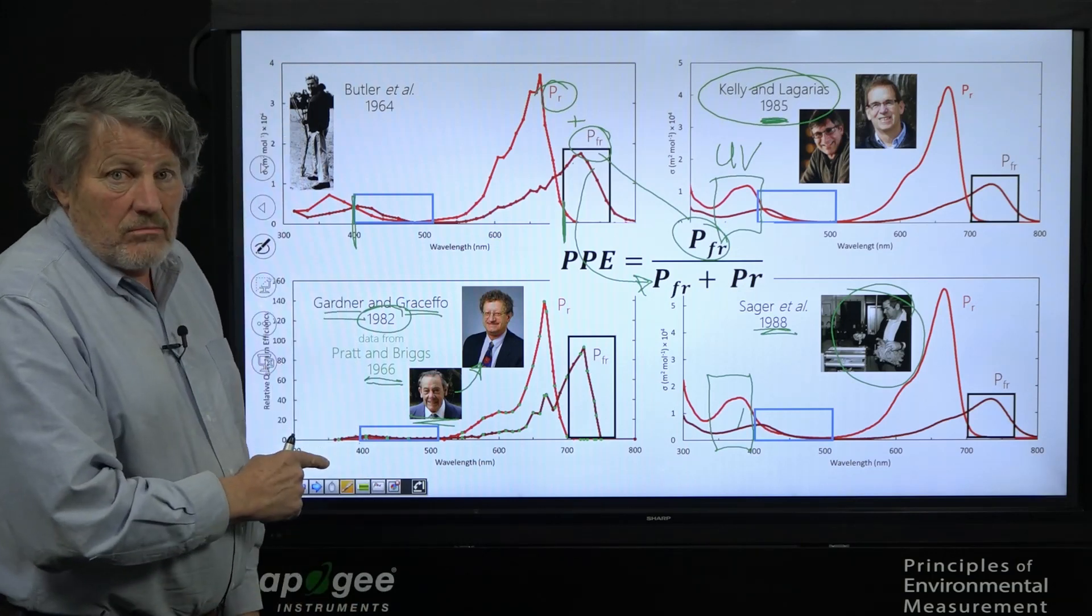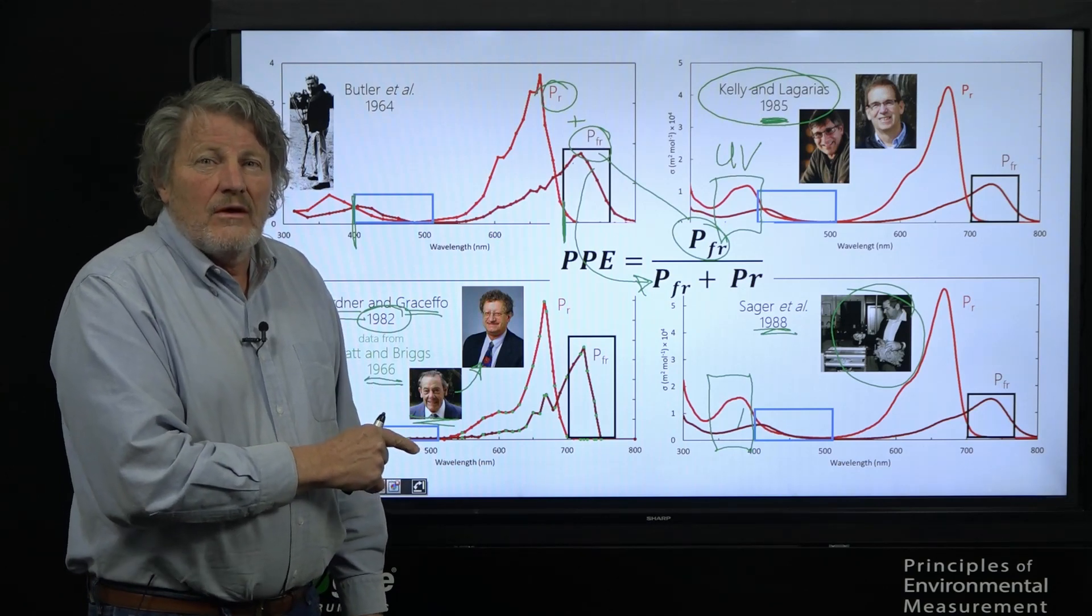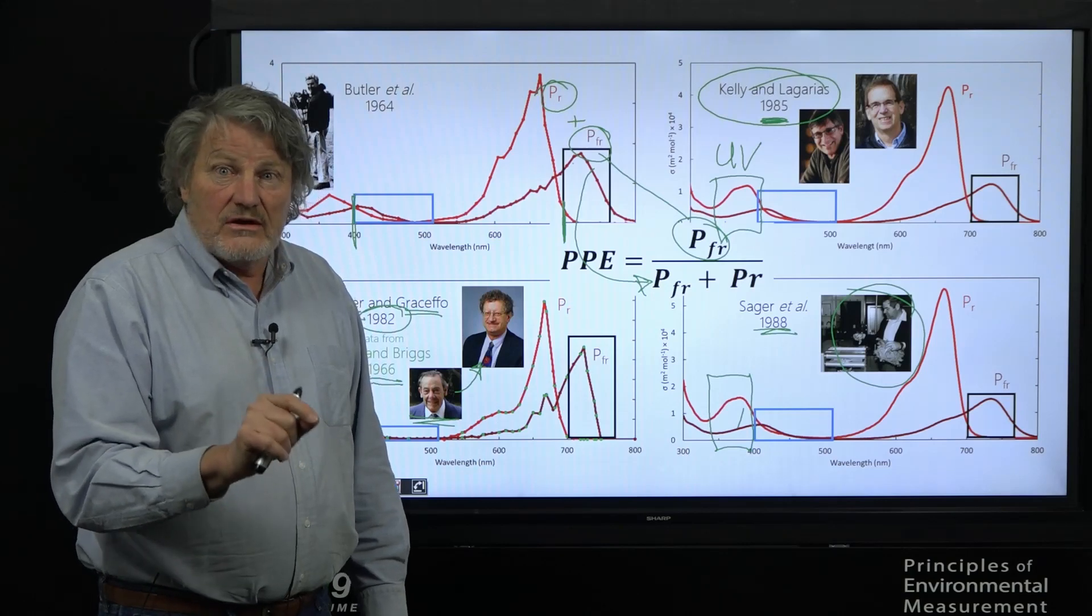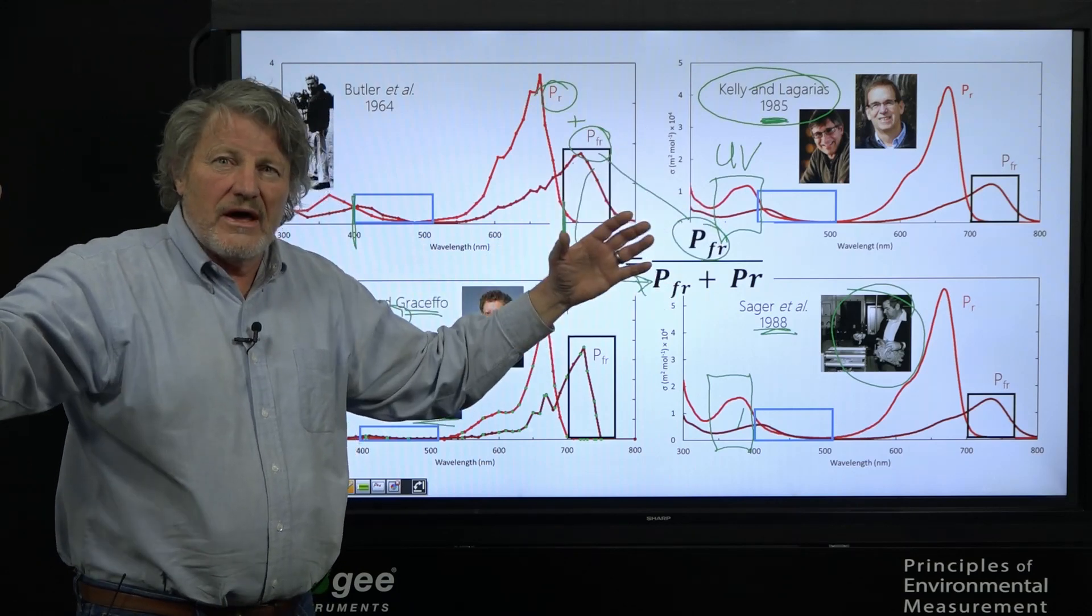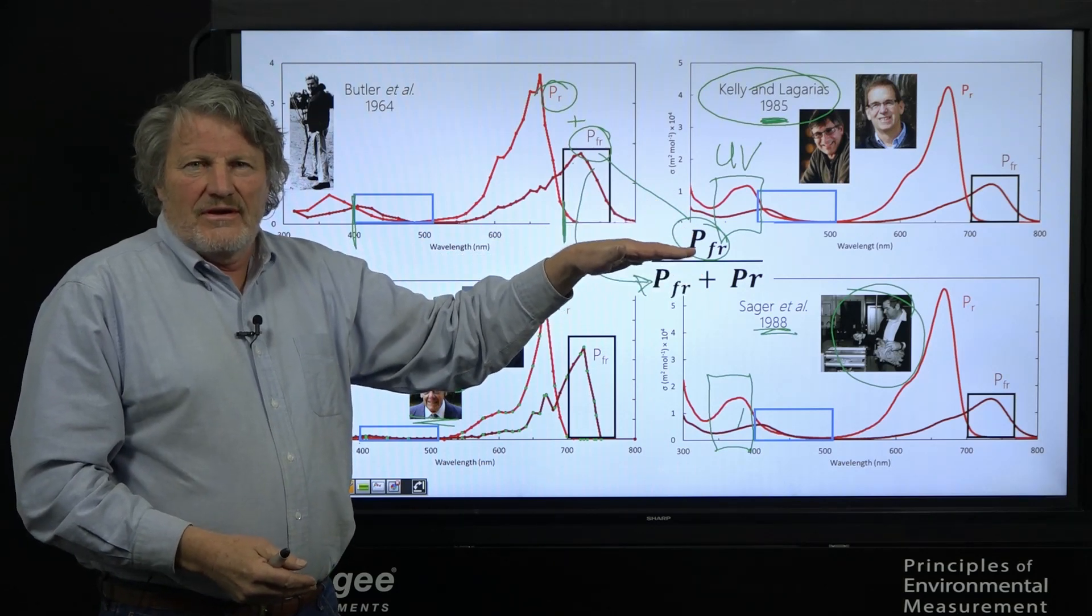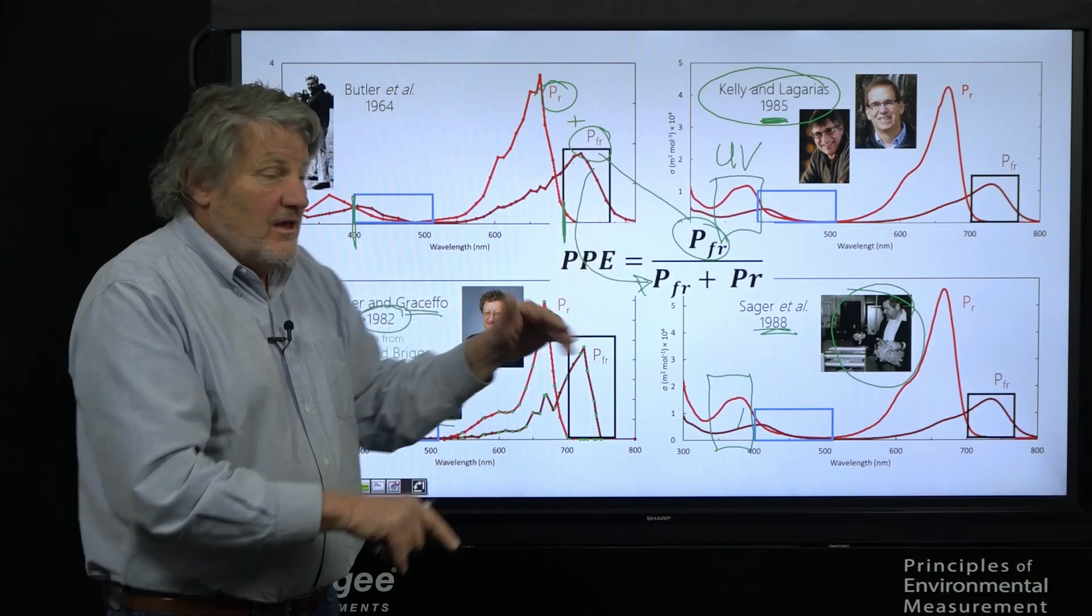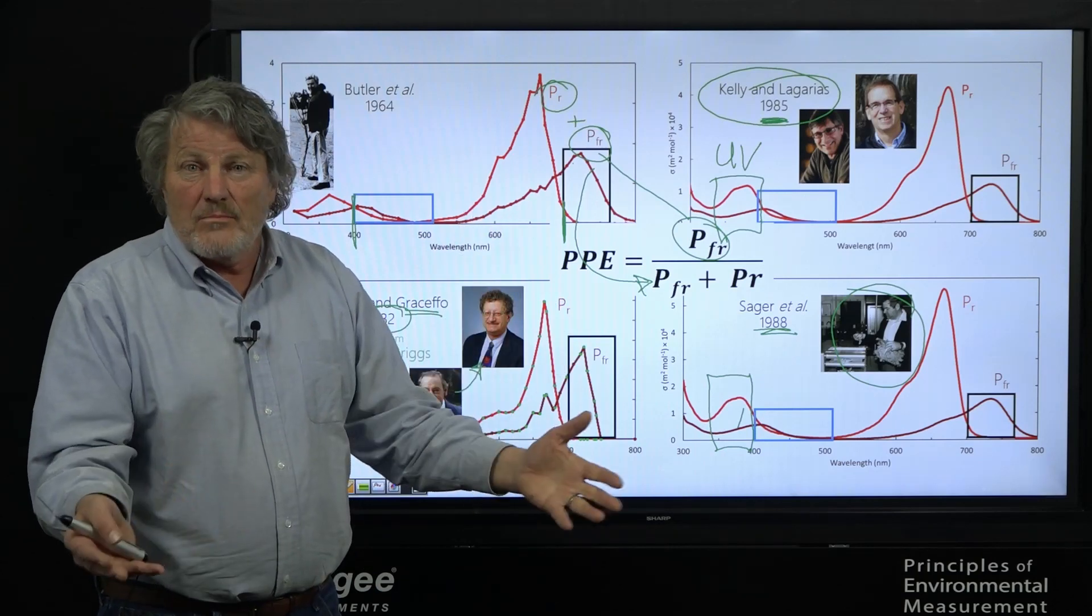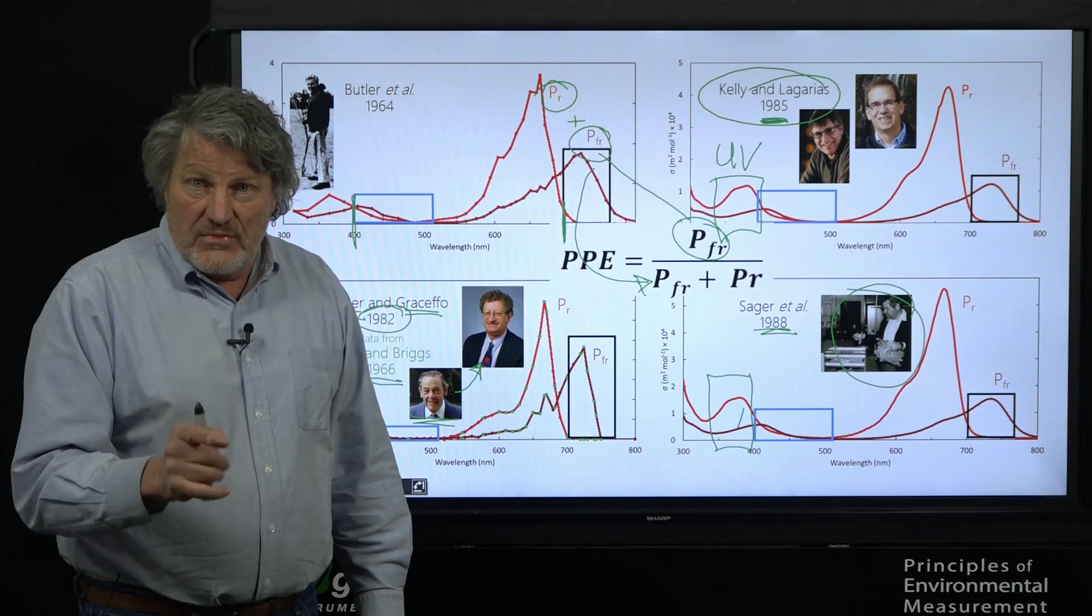But this is the background for the complicated background for how we came to have phytochrome photoequilibrium. Here's the problem. These were measured with no chlorophyll. Phytochrome molecules are inside a leaf. And it is covered with chlorophyll all around it, shaded by chlorophyll. And we make these measurements above the plants. And we're using that to predict inside the plants.